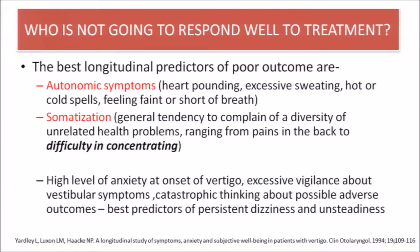Who is not going to respond well to treatment? The best longitudinal predictors for poor outcome are autonomic symptoms such as heart pounding, excessive sweating, hot or cold spells, feeling faint, or shortness of breath; somatization — a general tendency to complain of a diversity of unrelated health problems ranging from pain in the back to difficulty concentrating; high level of anxiety at the onset of vertigo; excessive vigilance about vestibular symptoms; and catastrophic thinking about possible adverse outcomes. These are the best predictors for persistent dizziness and unsteadiness.